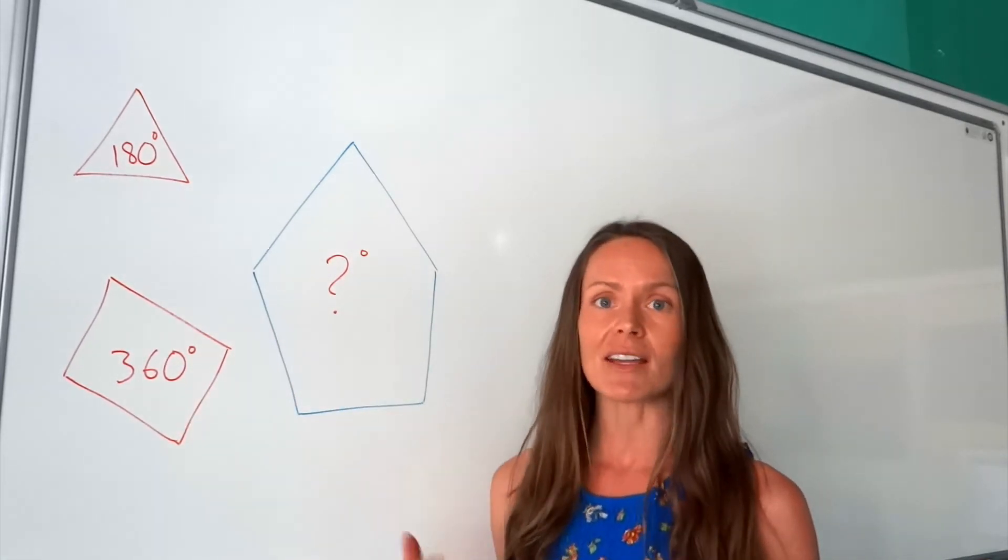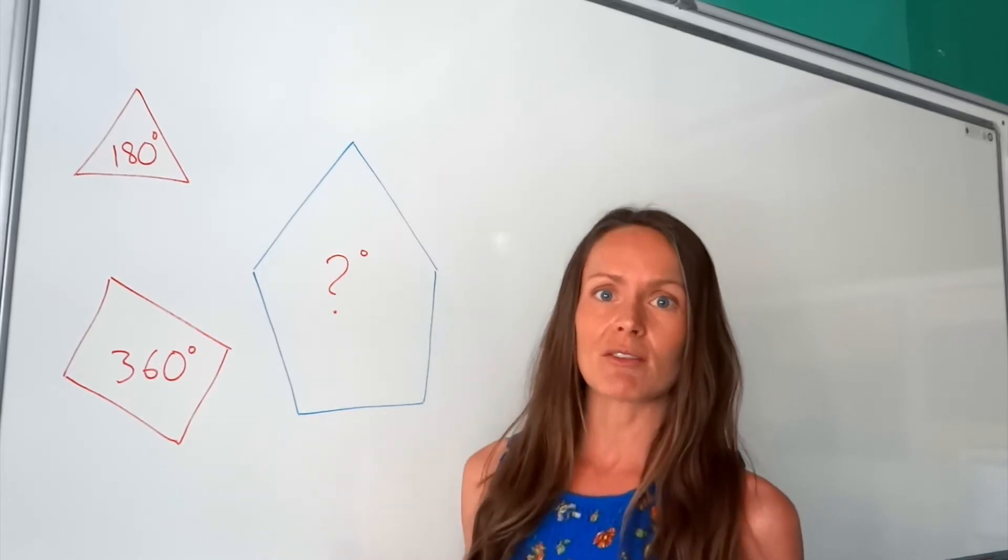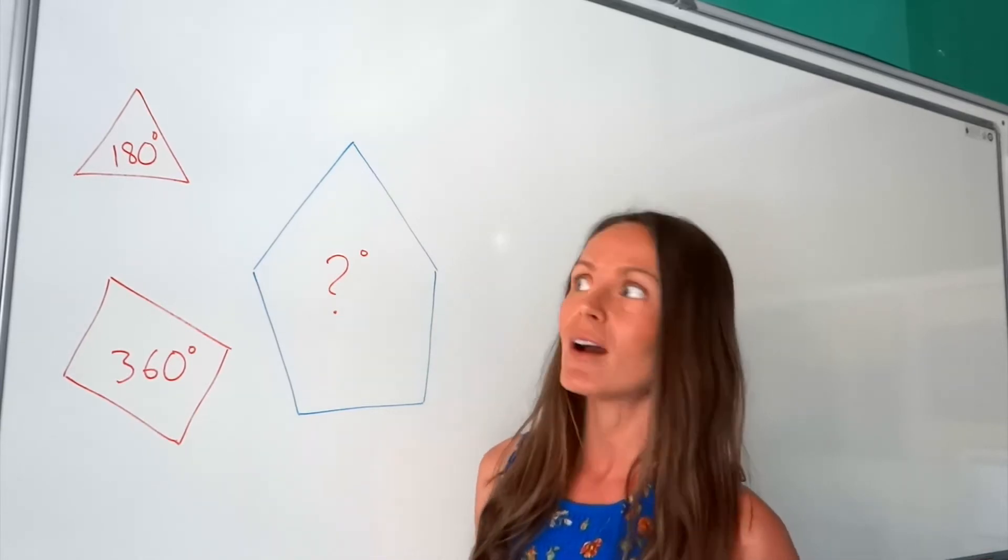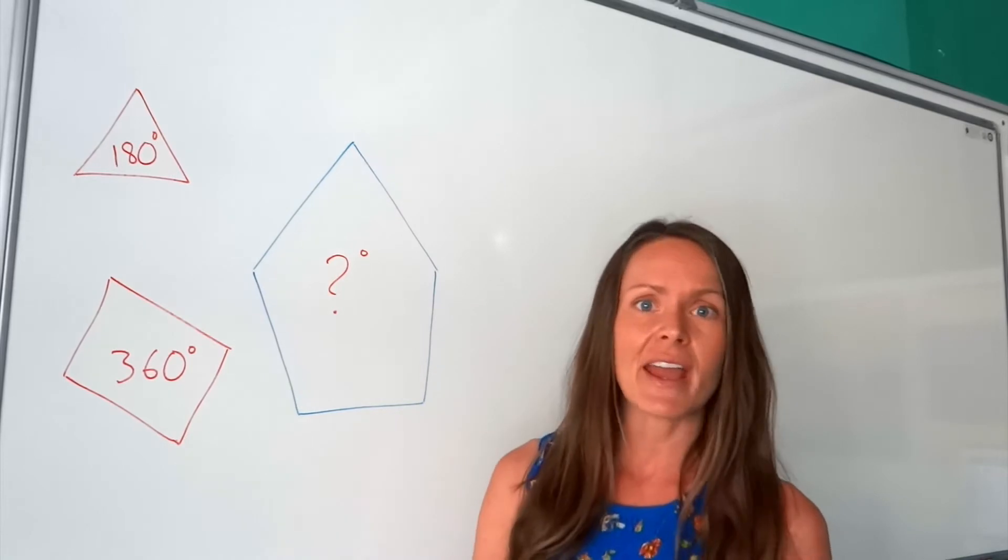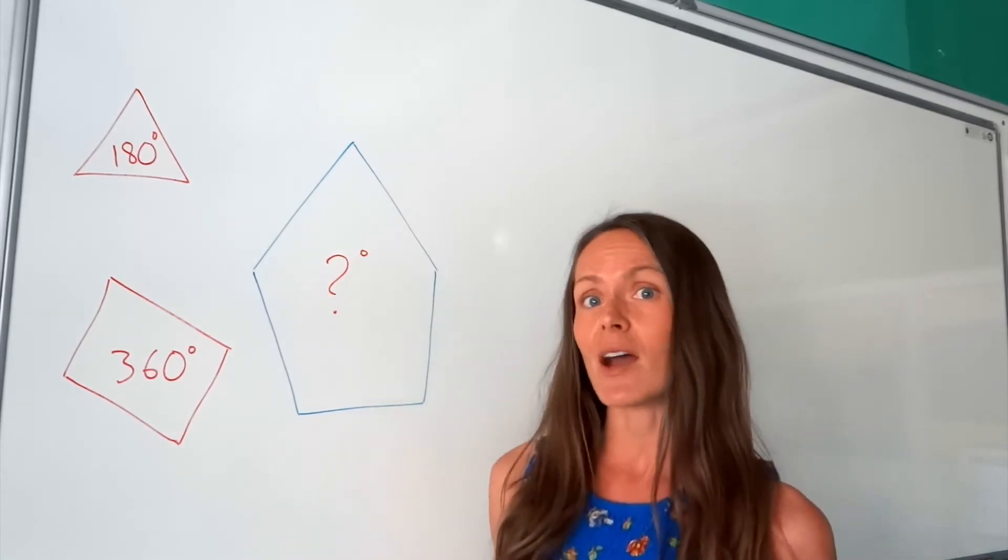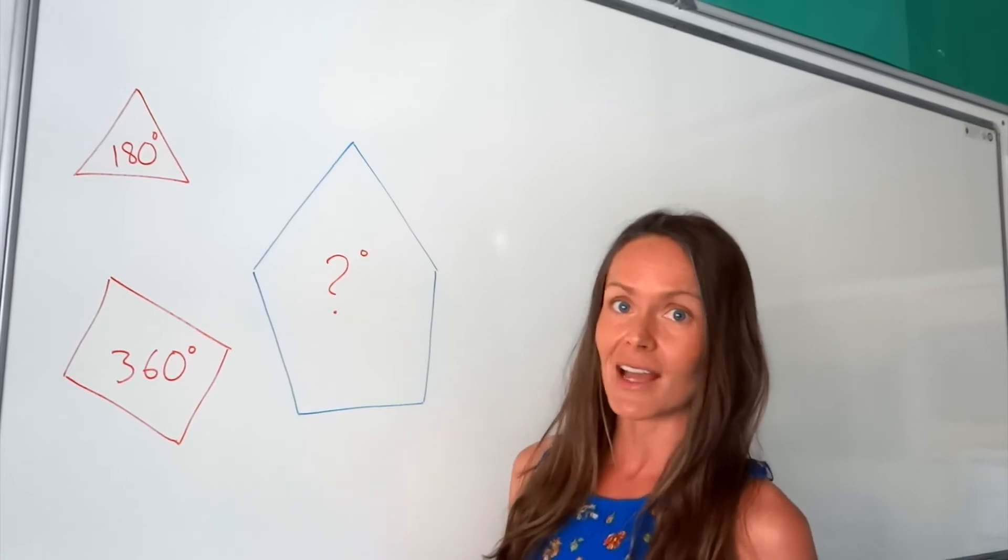But as we increase the number of sides, the number of degrees also increase. And it's quite difficult to remember how many degrees in a pentagon, a hexagon, a nonagon. So we have a formula and we have a method to help us work these angles out.